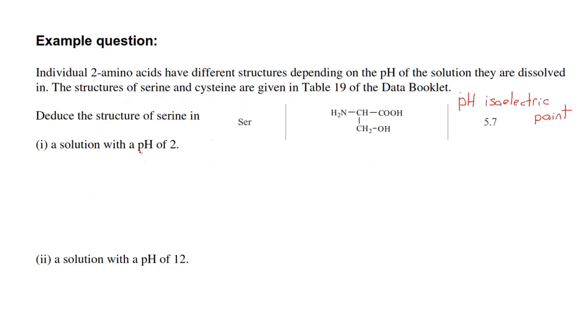Going back to part one of this question, you have to deduce the structure of serine in a solution with a pH of 2. The isoelectric point is 5.7. pH 2 is below the isoelectric point so the amino acid at pH 2 is going to have a positive charge.